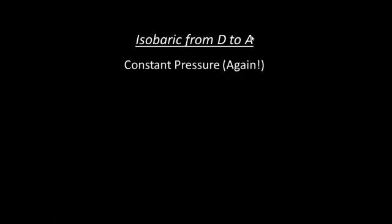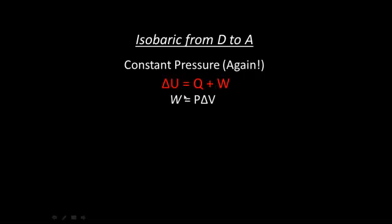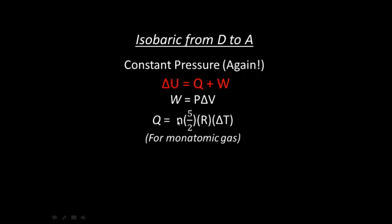And now the final process: an isobaric process taking the gas from D to A. For an isobaric process, remember it's constant pressure. We still have delta U equals Q plus W. Work is still pressure times the change in volume, and Q is still the number of moles times 5/2 times the gas constant times the change in temperature.